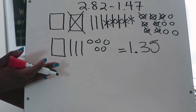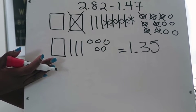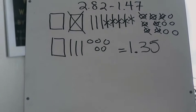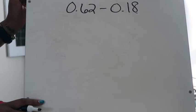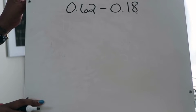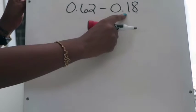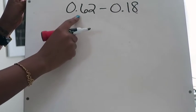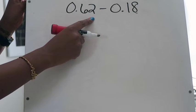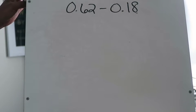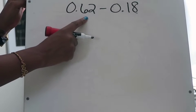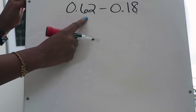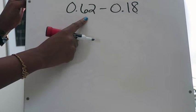That's the first example. Now on to our second example. We are going to subtract eighteen hundredths from sixty-two hundredths. Remember, the first thing you want to do is model the decimal that is being subtracted from, which in this case is sixty-two hundredths, so I'm going to model that first.